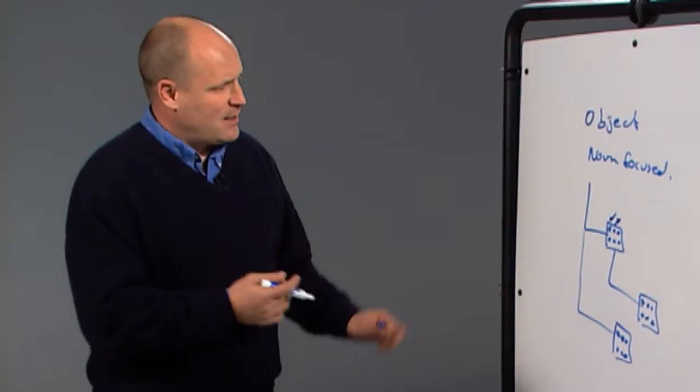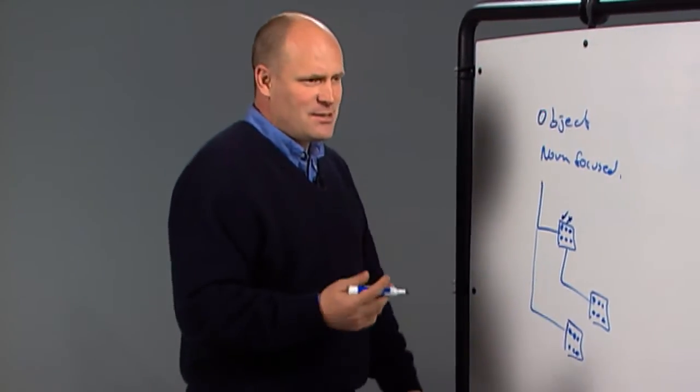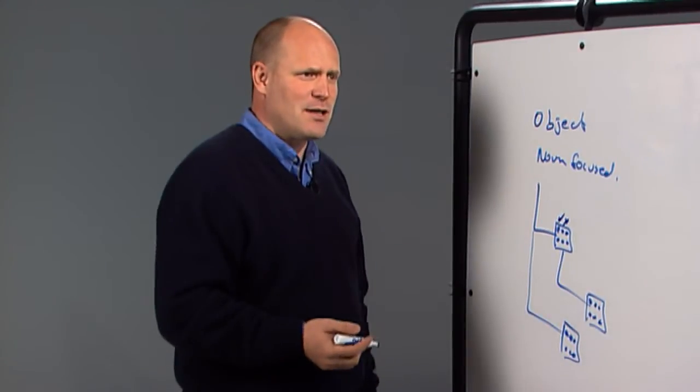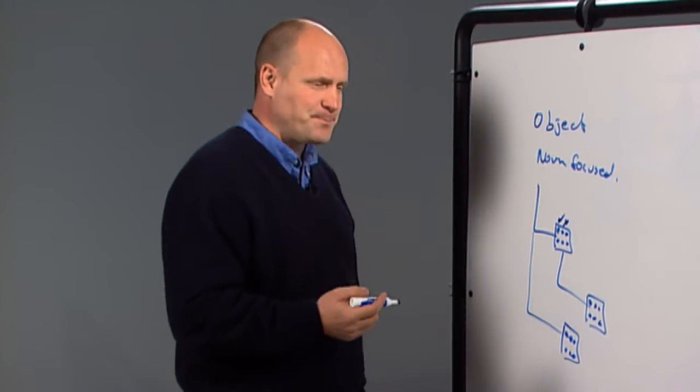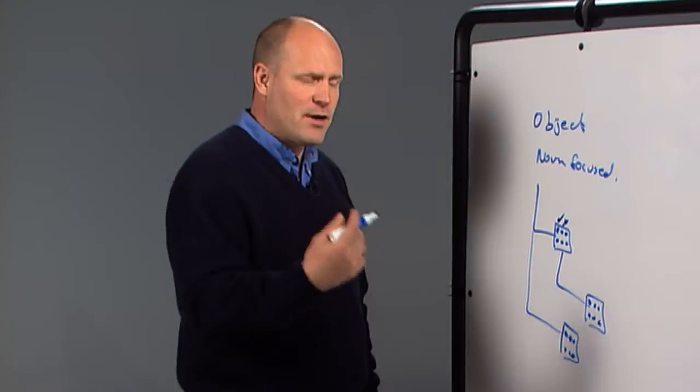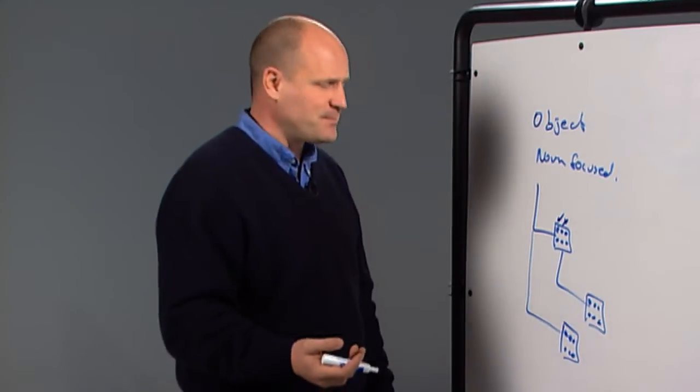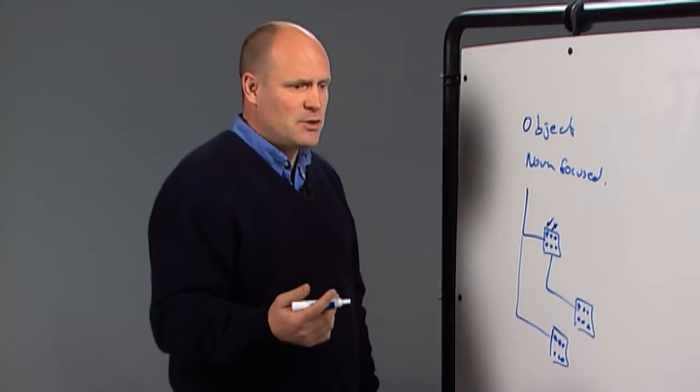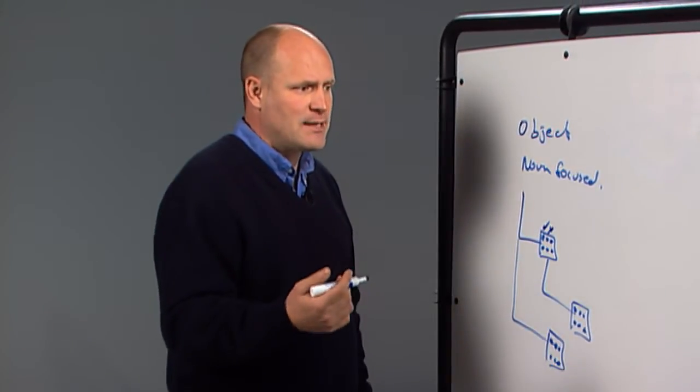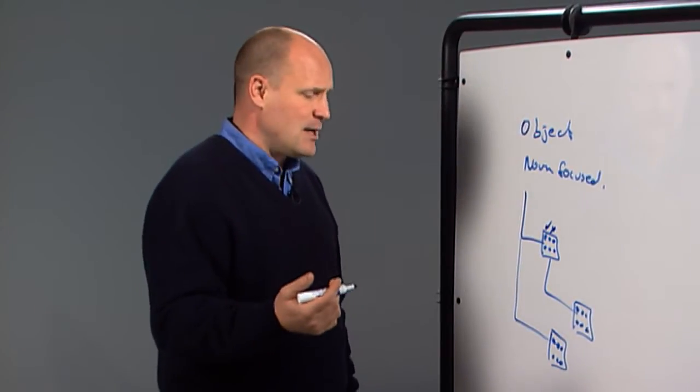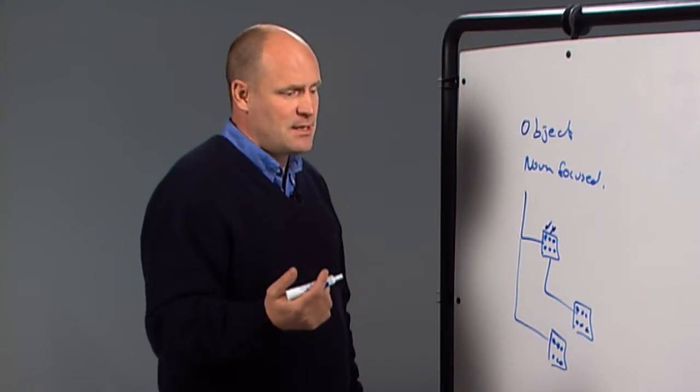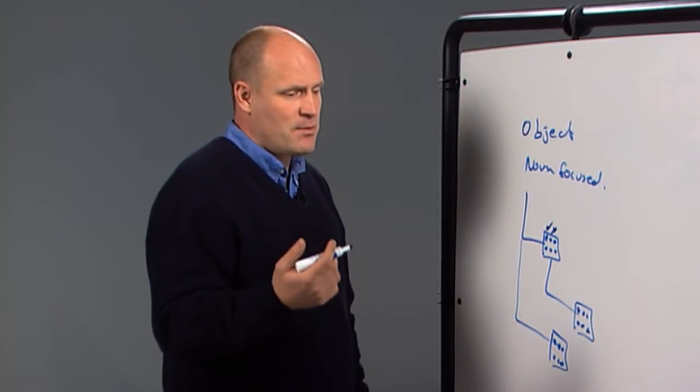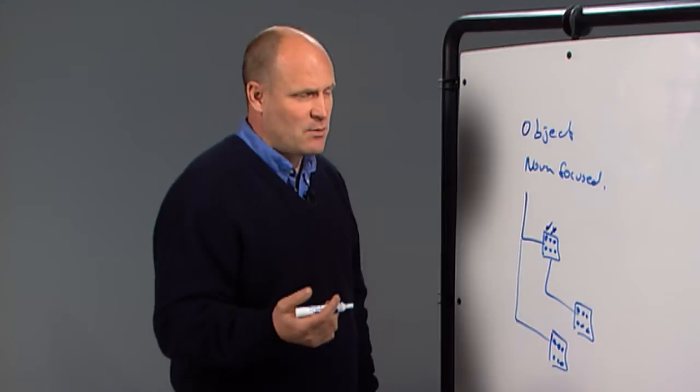But if you take a step back and get out of the details of this, you start to realize there's something really fundamentally broken with this model. Think about a very common operation, moving a mailbox. It's something that you need to do very regularly. It should be a fairly straightforward process. And you'd like to delegate it to fairly straightforward people that don't have a lot of security checks associated with them.